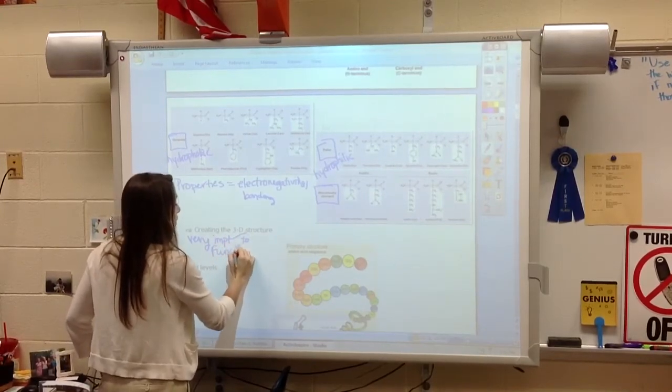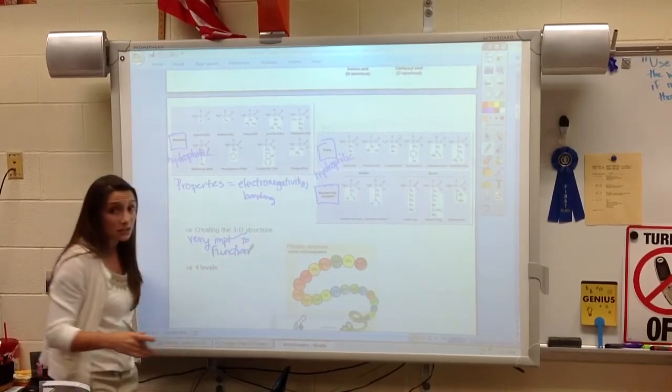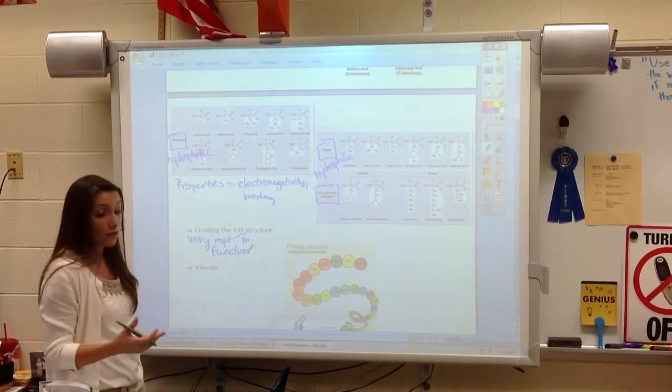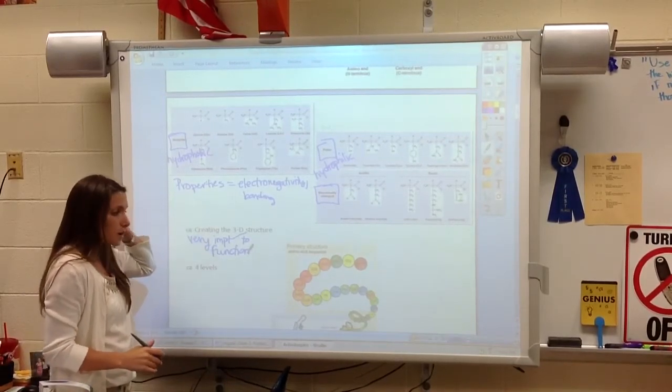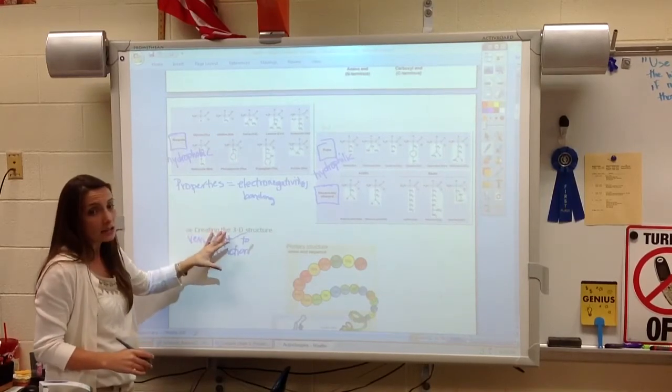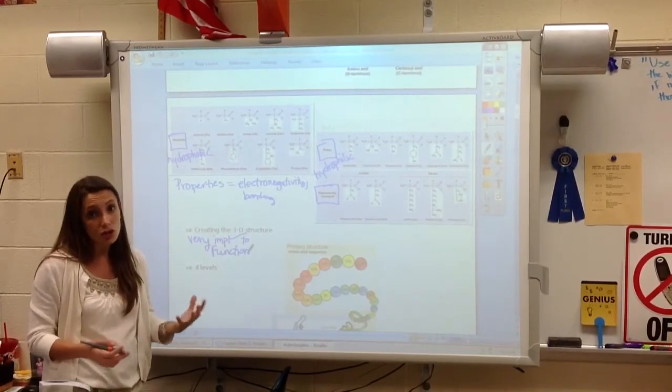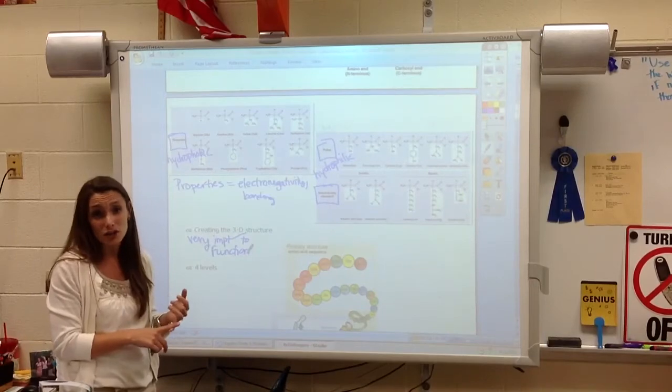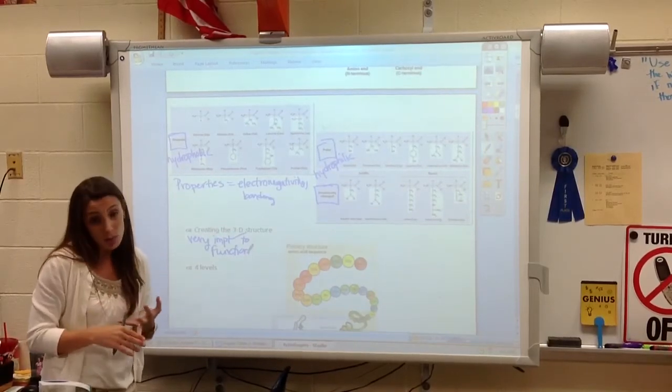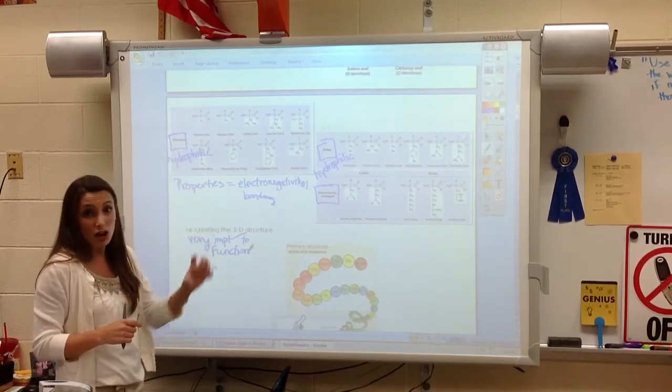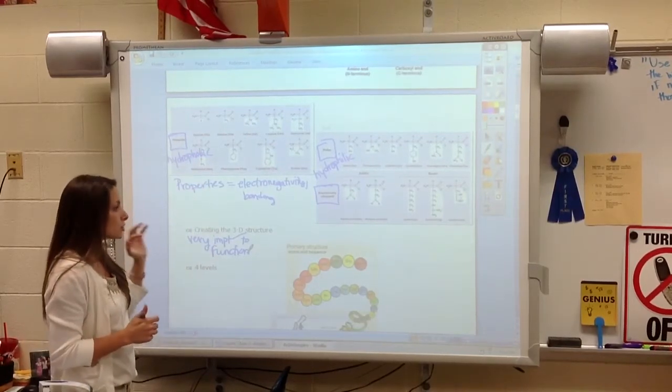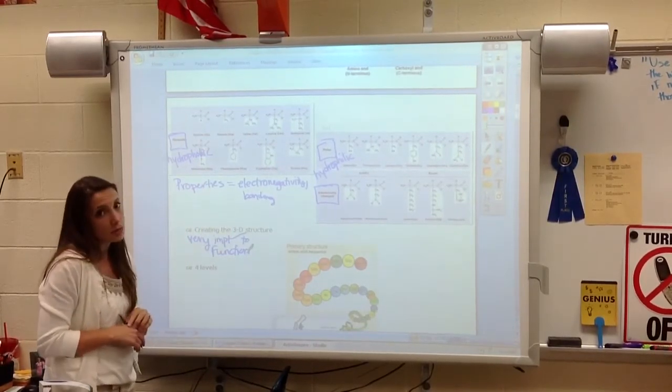We'll talk more a little bit later about specific examples and their functions, especially throughout the year. But for now, we just want to know that the shape that it creates will allow it to do certain jobs. Maybe it can carry oxygen. Maybe it can carry carbon dioxide. Maybe it's a transport protein across the cell membrane. So the shape is going to really determine the function.